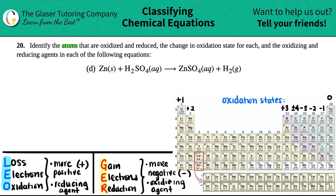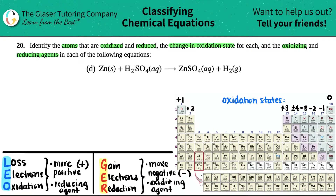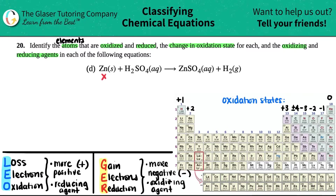Number 20: identify the atoms that are oxidized and reduced, the change in oxidation state for each, and then find the oxidizing and reducing agents in the following equations — we have letter D. We're talking about finding which atoms are oxidized and reduced, so this equation has to be a redox equation, meaning there are changes in oxidation state for individual atoms. Whenever you're dealing with oxidation and reduction, you need to find the oxidation state for each individual atom on both sides — reactants and products.